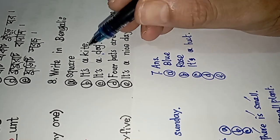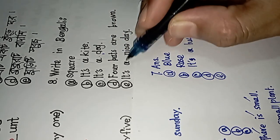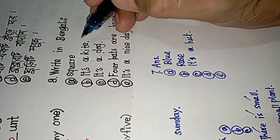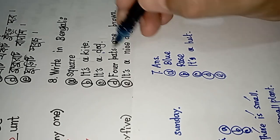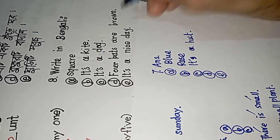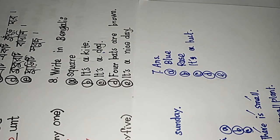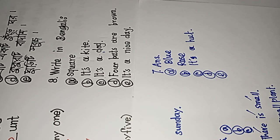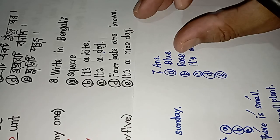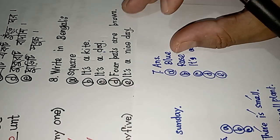In Bengali, our first place is a square. It's a kite. It's a dock. Four bats are brown. It's a nice day. The first place is a square. It's a kite. It's a dock. It's a cuckoo. Four bats are brown. Two bats. This is the one — in the next place we've got to look at the bats. We've got to look at this — this is a beautiful thing.